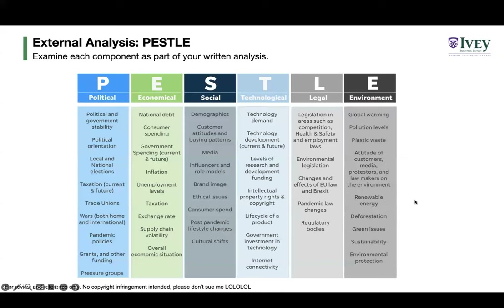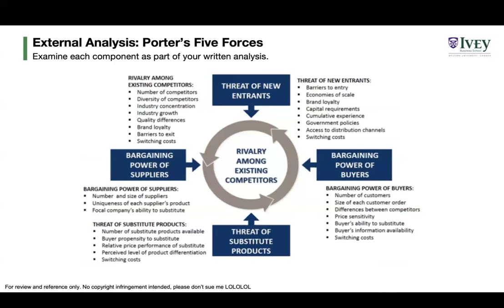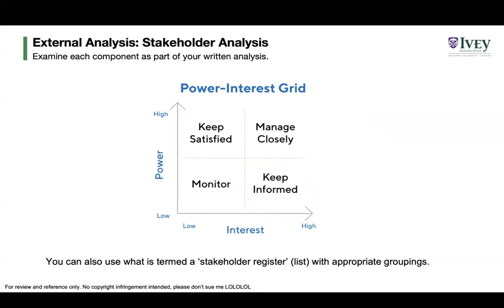For PESTEL, look at each category and pick out an opportunity or threat. For Porter's Five Forces, in a competitive differentiation case, rivalry among existing competitors and threat of new entrants will be very relevant; for a cost leadership case you might care more about bargaining power and substitutes. For stakeholder analysis, compile a stakeholder register and use the power-interest grid to determine how to engage with different stakeholders — though this may be more of an implementation consideration.